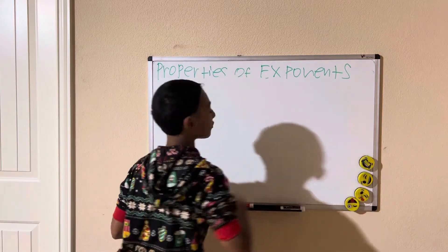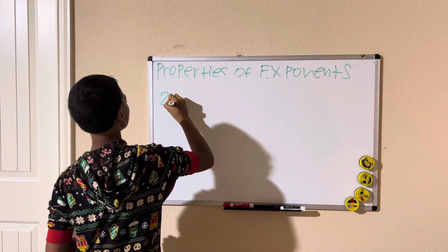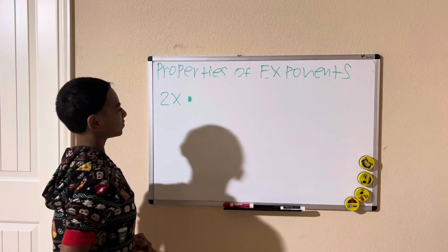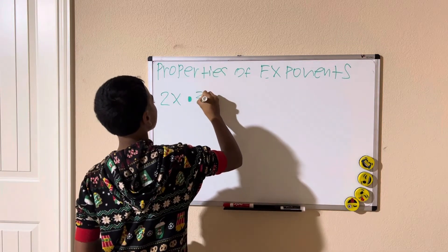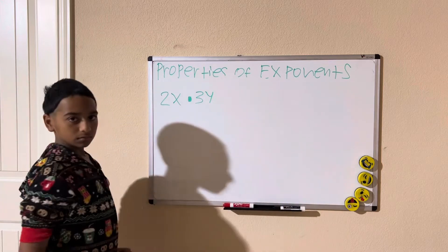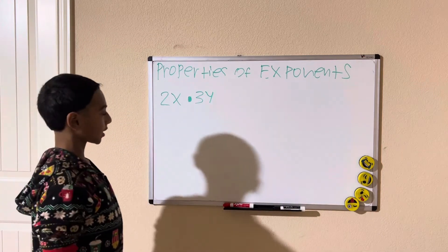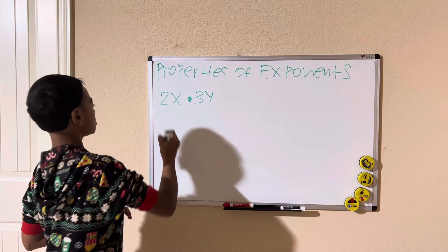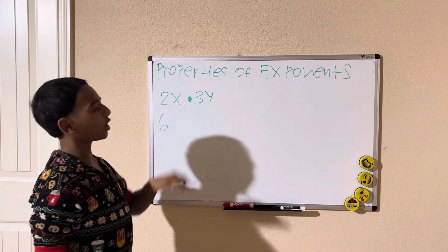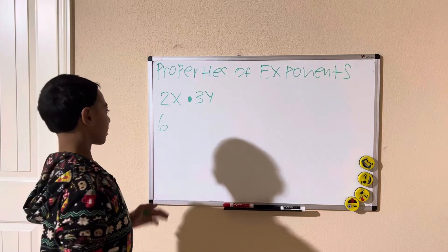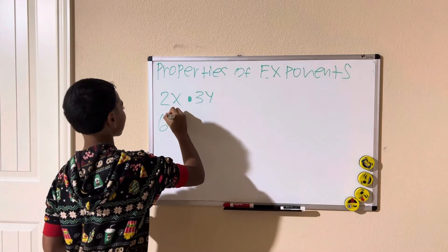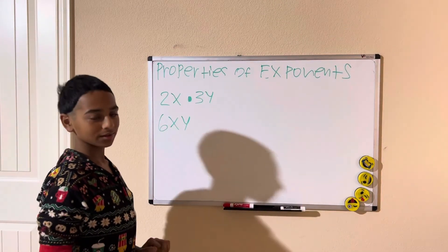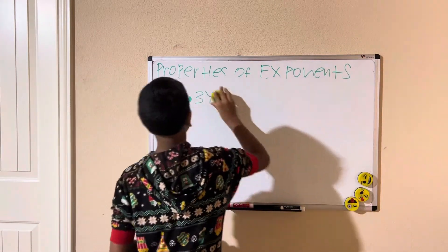Now let's say we have more variables: 2x times 3y. We can simplify 2 times 3, which is 6. But x times y — we cannot combine those since they are different variables — so we leave it as 6xy. That is our solution.